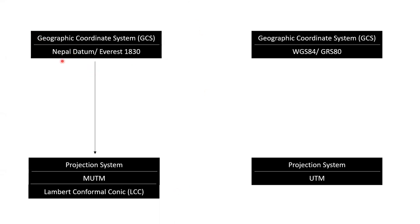In Nepal, geodetic control points are based on Nepal Datum. These are latitude-longitude coordinates, and we have converted them into easting-northing coordinates by applying the MUTM projection system. We also have topographic maps, cadastral maps, and other kinds of maps and GIS data which have adopted the MUTM system. The GCS associated with the MUTM system is by default Nepal Datum.